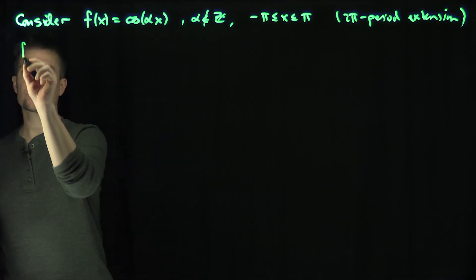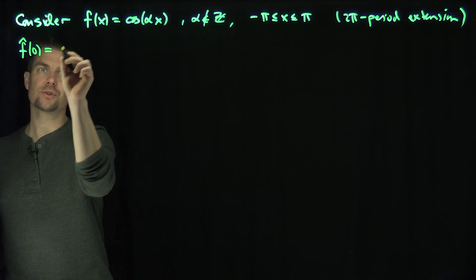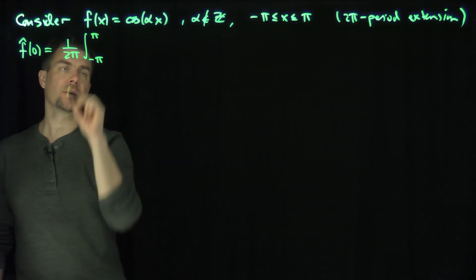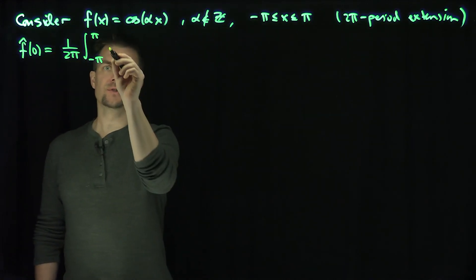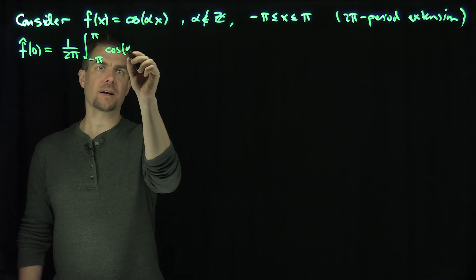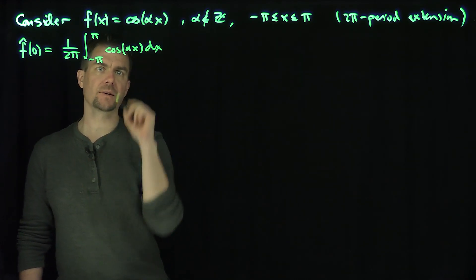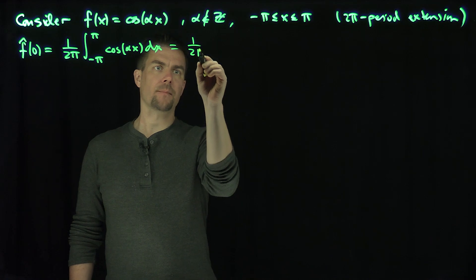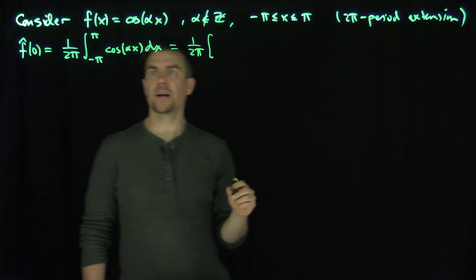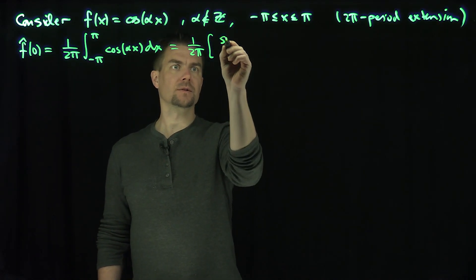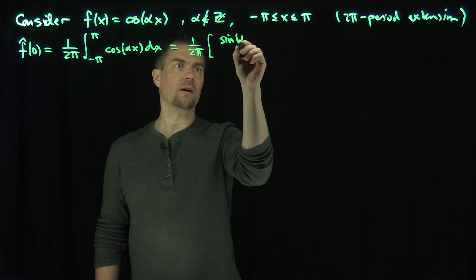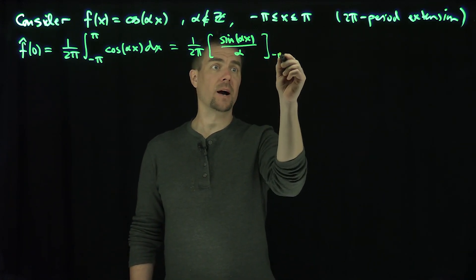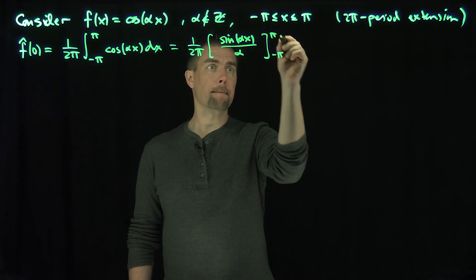So f̂(0), the zeroth Fourier coefficient, is just 1 over 2π times the integral from negative π to π of cos(αx) dx. We're going to get 1 over 2π times sine of αx over α, evaluated from negative π to π.